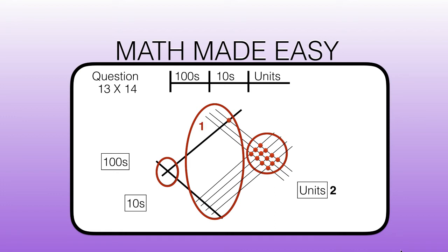We have 1, 2, 3, 4, 5, 6, 7, 8 tens — so we write 8 next to the tens box. And we have 100, so we write 1 in the hundreds box. We have 1, 8, 2 and 182 is the correct answer.